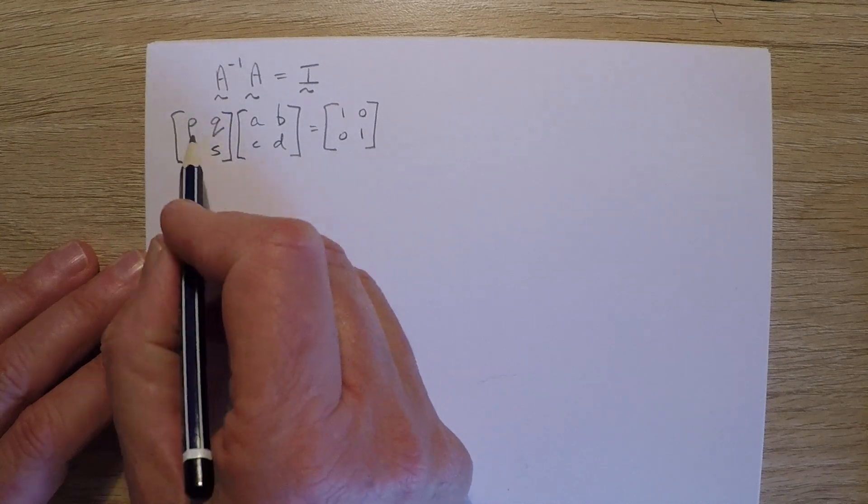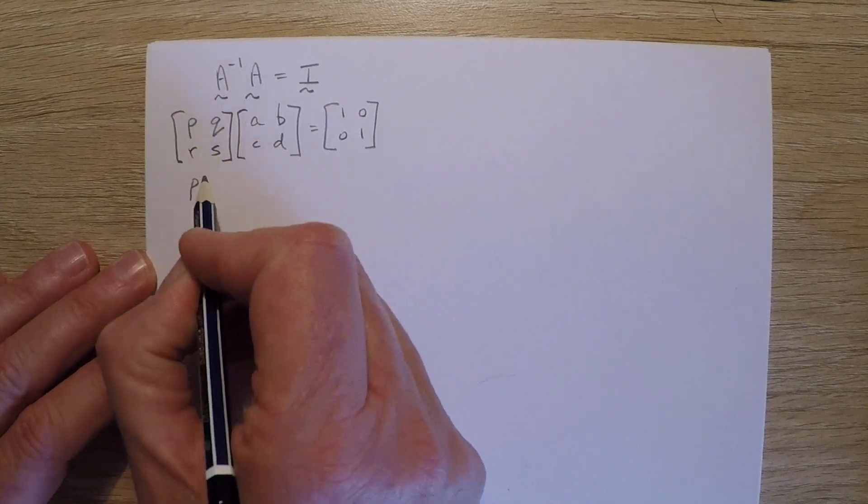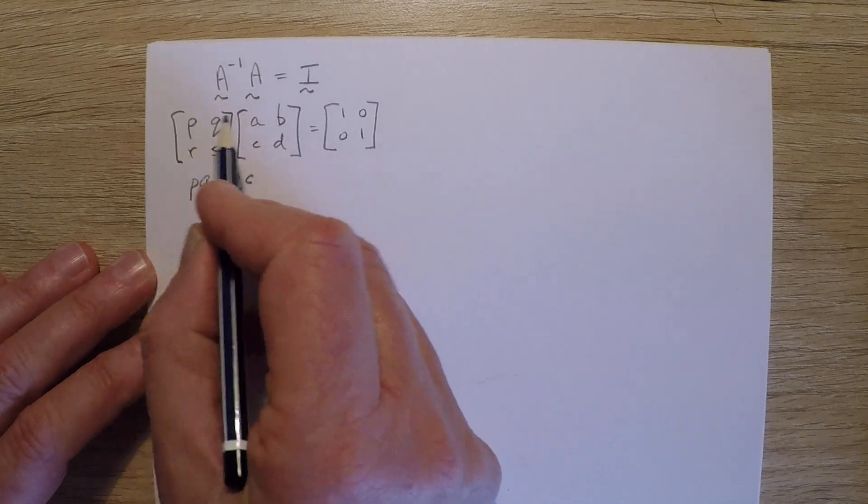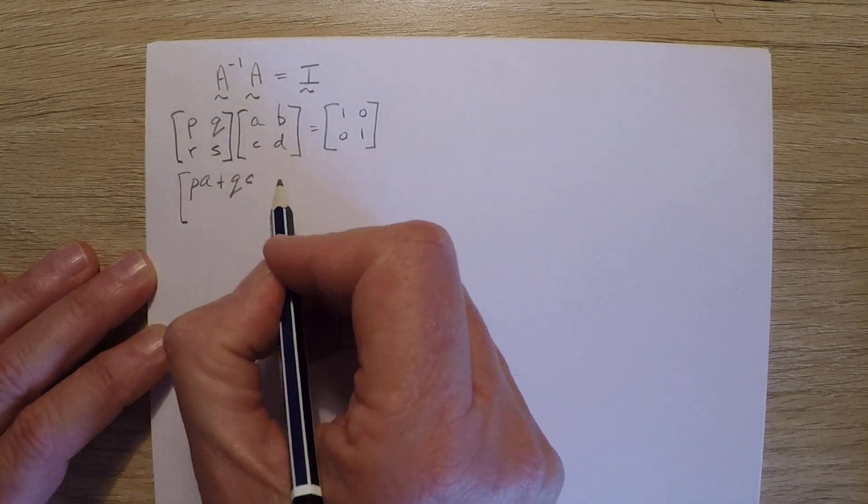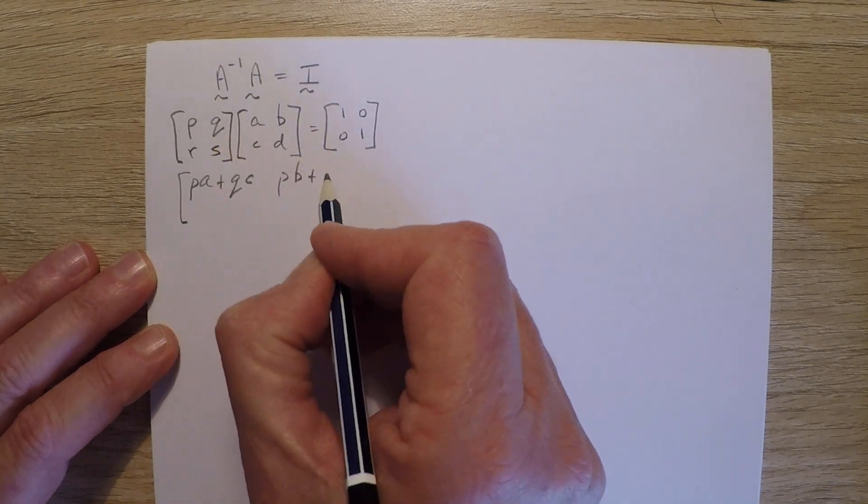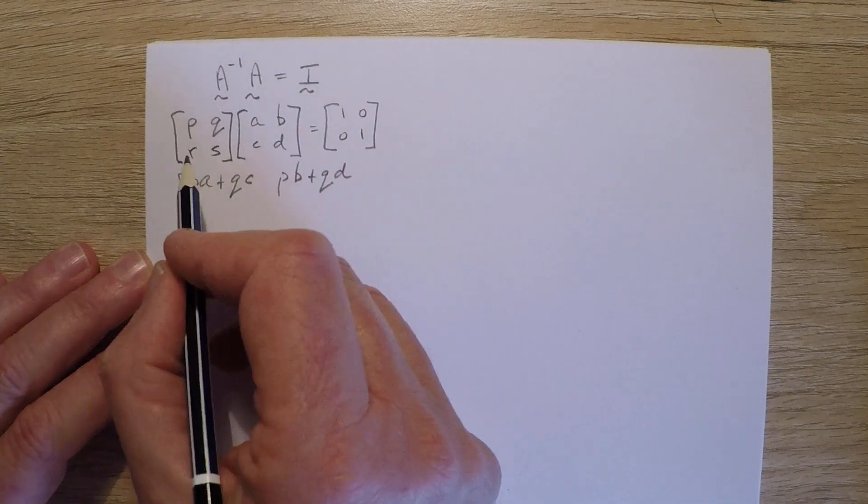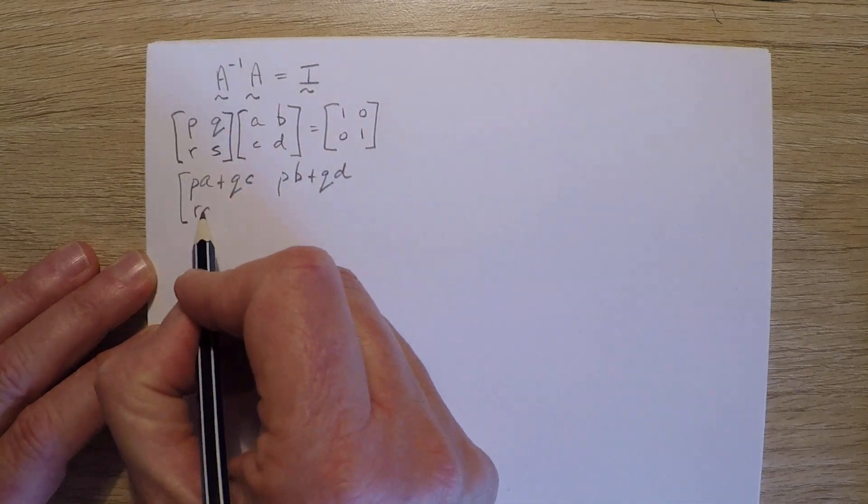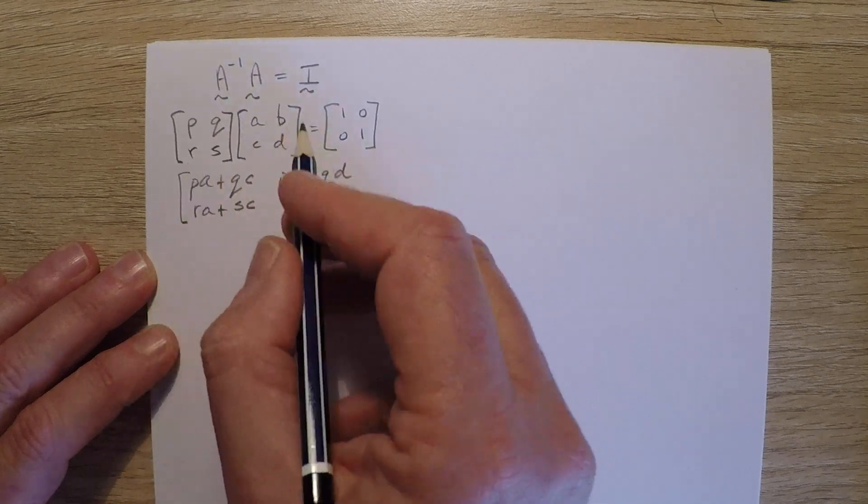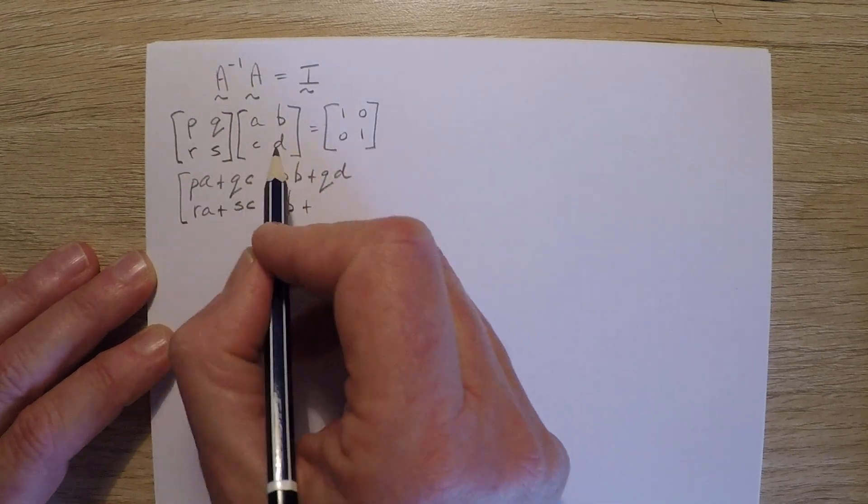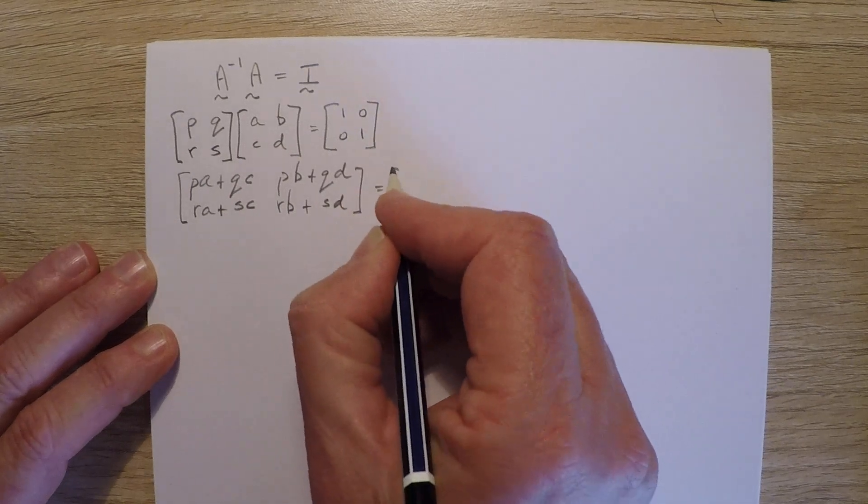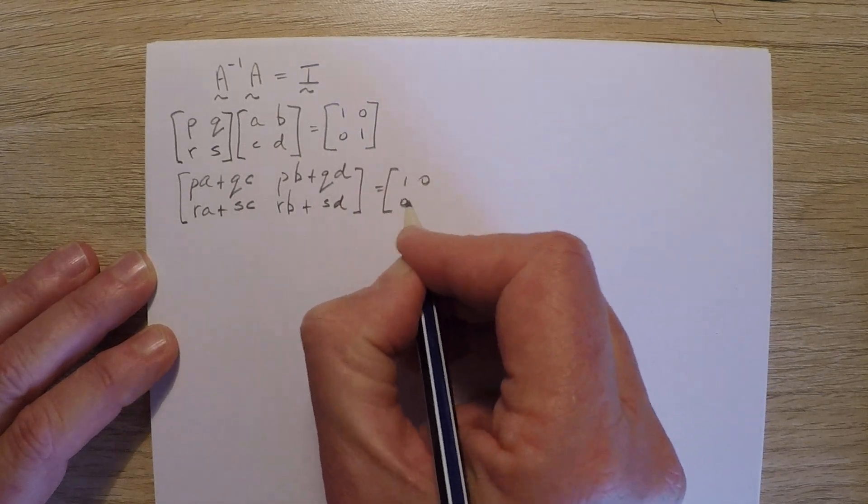So we'll begin by multiplying through. P times A plus Q times C would be the first element of this product. P times B plus Q times D. R times A plus S times C. R times B plus S times D would equal the identity matrix 1, 0, 0, 1.